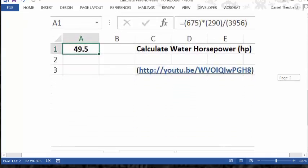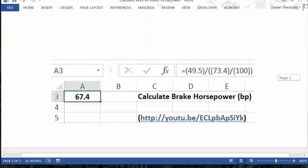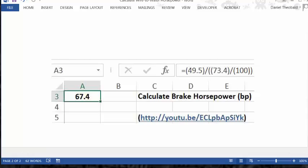Now let's remember this 49.5 and look at the calculation for the brake horsepower, which uses the water horsepower calculation, the 49.5, and then uses the pump efficiency divided by 100, which is the decimal equivalent of the pump efficiency. That gives us 67.4 brake horsepower.